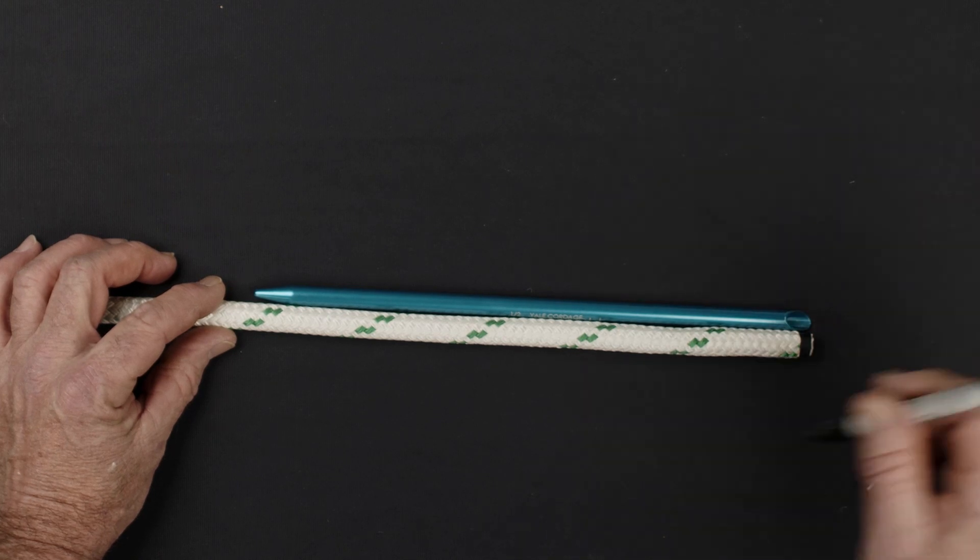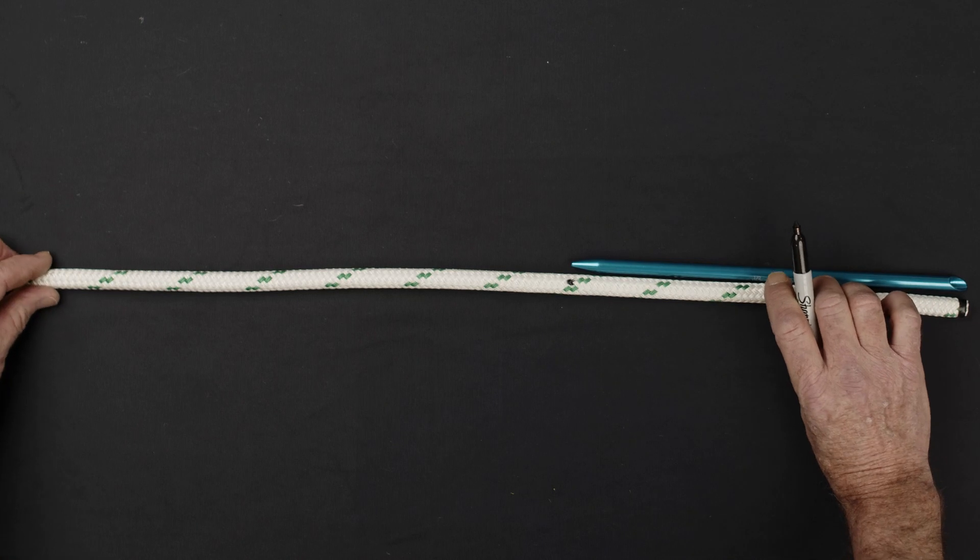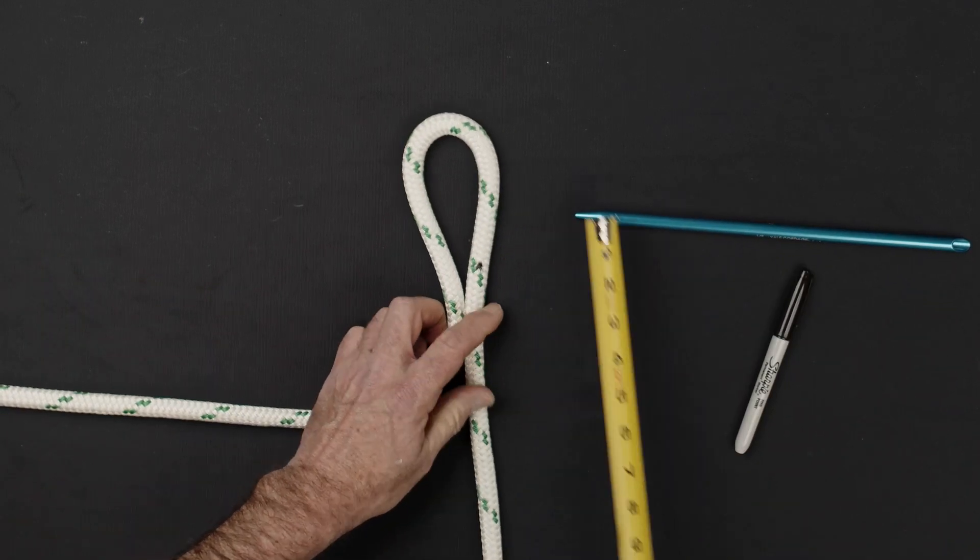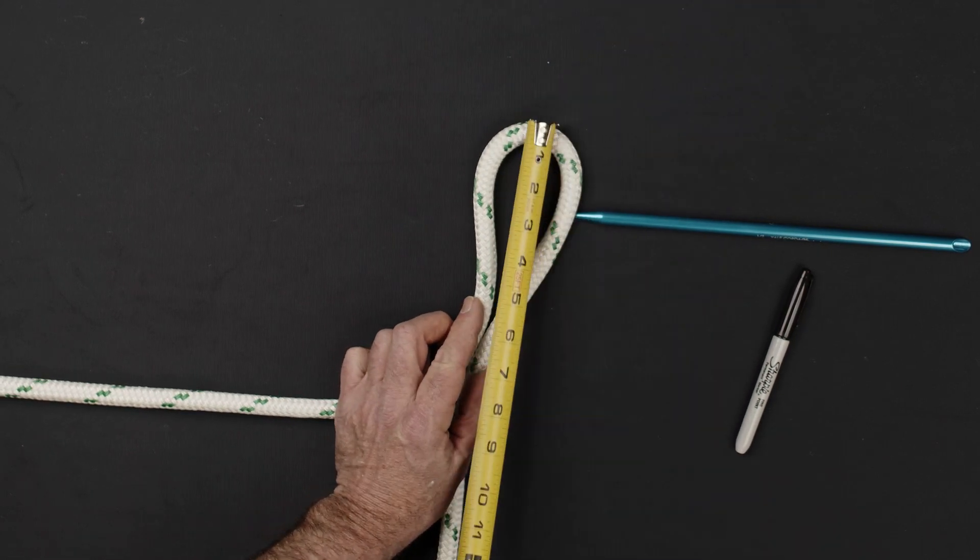Using an appropriately sized FID, make a mark at one FID length from the end of the rope. If a desired eye size is needed, use a tape measure ruler to verify the eye size now.